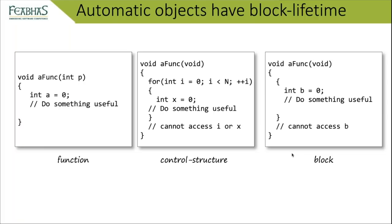Automatic objects are block-scoped, with the outermost block at function level. For example, int a declared inside a function is visible throughout that function. Control structures like a for loop can localize objects to within that block. C99 introduced the ability to define the loop variable i directly in the for loop, which is scoped and has lifetime only within that block.